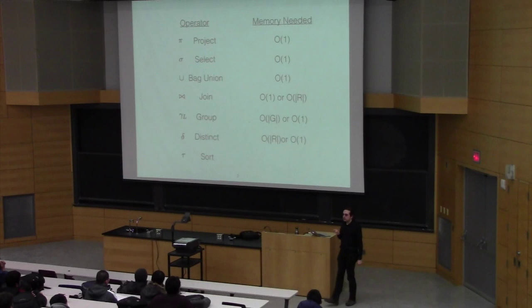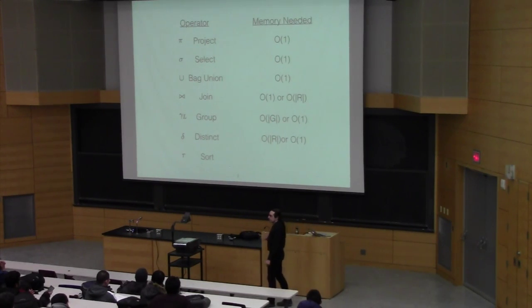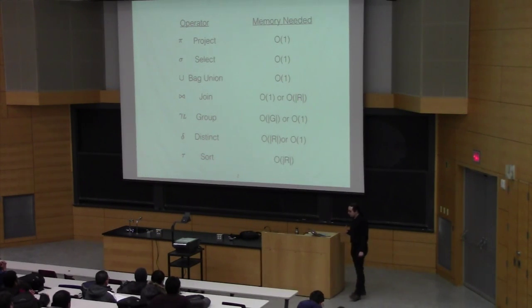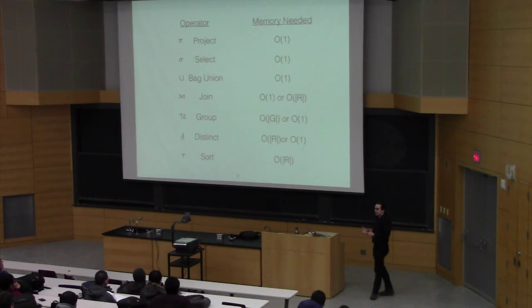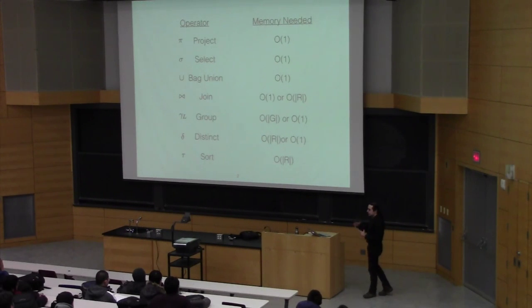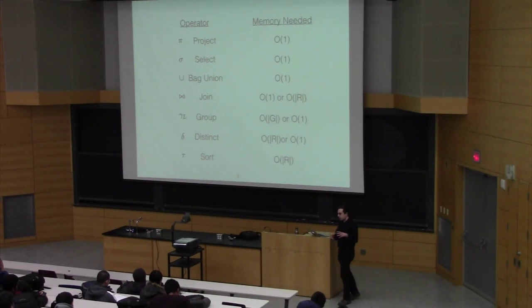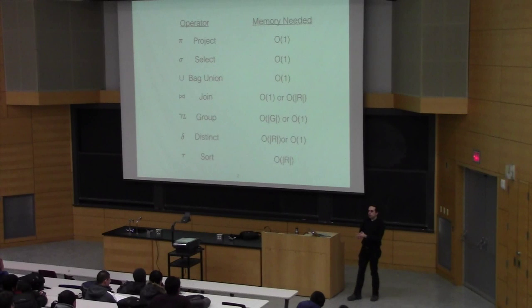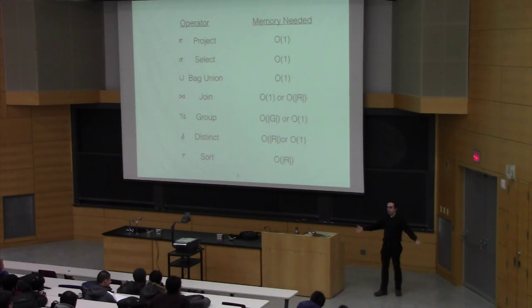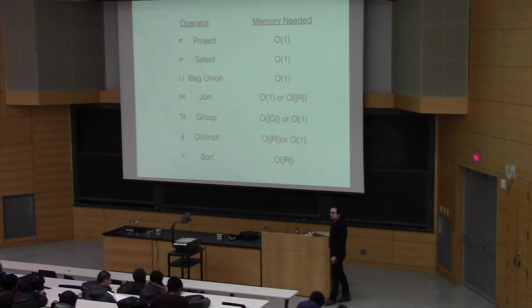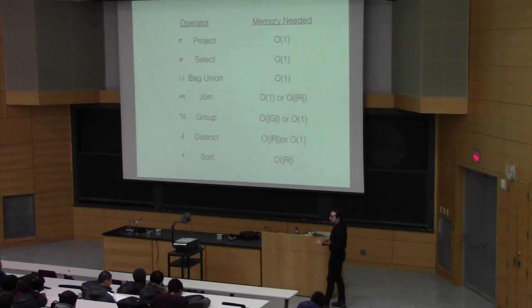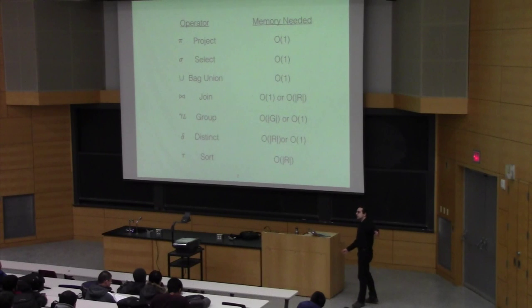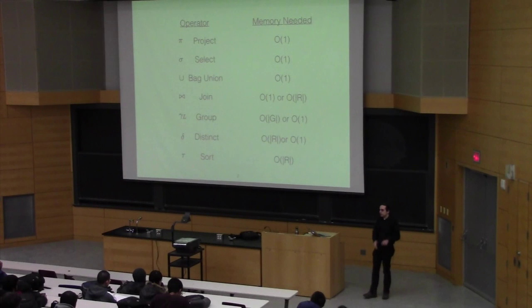What about sort? We need the entire amount of memory available. For three operators — join, group, and distinct — there's a trade-off. For some instantiations the memory requirement is very small, for others it's very large. Why would we want to throw an entire relation's worth of memory at a join algorithm? Grace hash join is way faster than nested loop join, and way faster than external hash join too, if you can fit everything in memory.